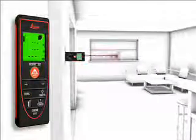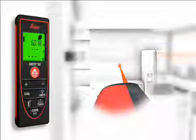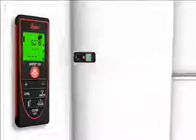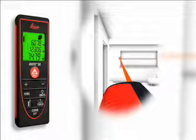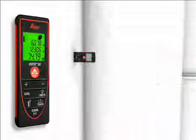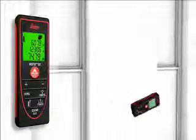Two to three simple measurements are enough and the Leica DISTO D2 calculates fast and precise wall and ceiling areas as well as volumes. Single and final results can be displayed at the same time due to the three-line display.